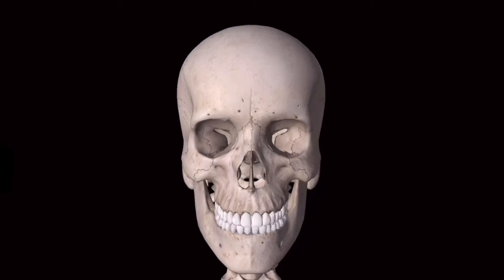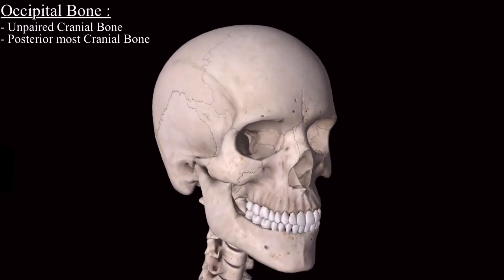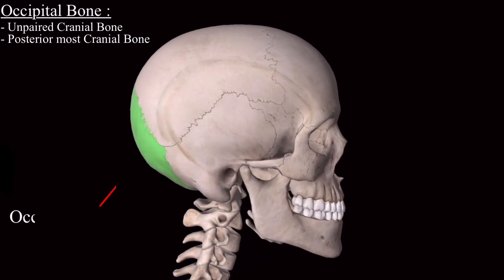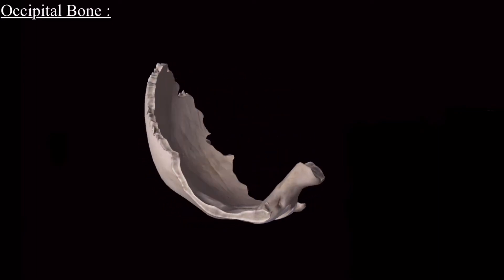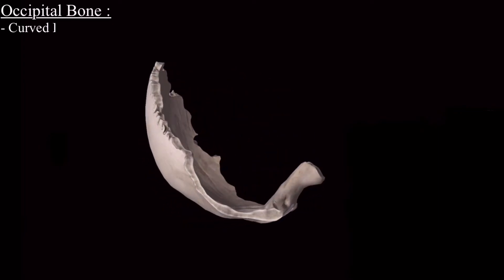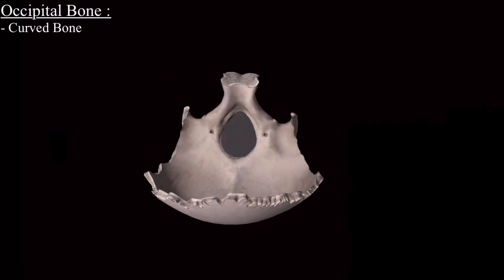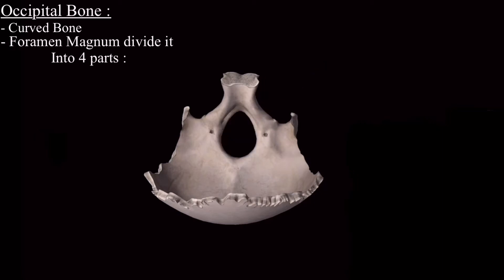In this video, I will discuss the occipital bone in detail. The occipital bone is an unpaired and posterior-most of all the bones in the skull. There is a large foramen in the occipital bone called the foramen magnum, which divides the occipital bone into four parts.